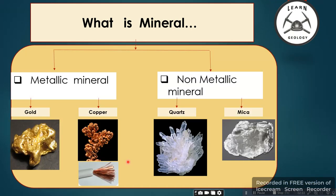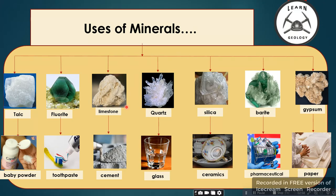There are two types of minerals: metallic minerals and non-metallic minerals. Metallic minerals — such as gold and copper — are good conductors of electricity. Non-metallic minerals, like quartz and mica, have no electrical conductivity.